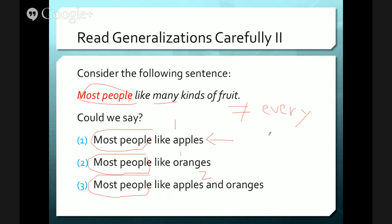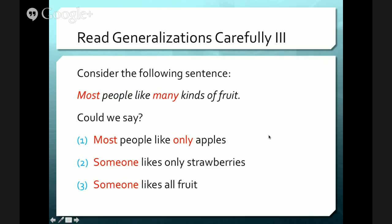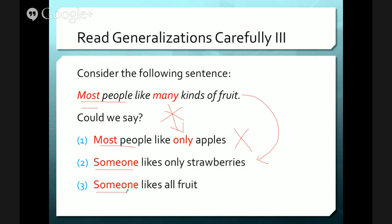Let's look at some that are harder. Consider again: most people like many kinds of fruit. Could we say most people like only apples? I don't think so — we have 'many' versus 'only,' so these two don't match and we shouldn't say that. What about 'someone likes only strawberries'? This might be true, but it has no connection with the first claim. The first claim says 'most,' whereas now we're saying 'someone.' Both of these could be possible, but they're not things we should say on the basis of the original sentence.